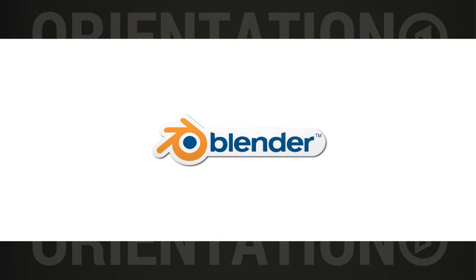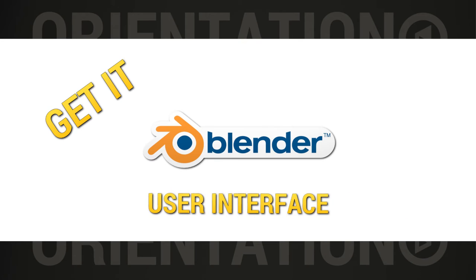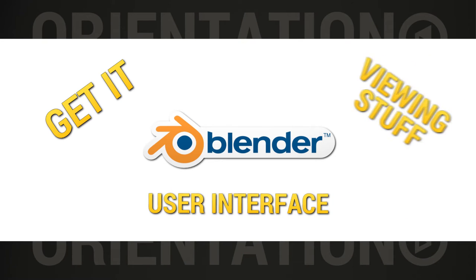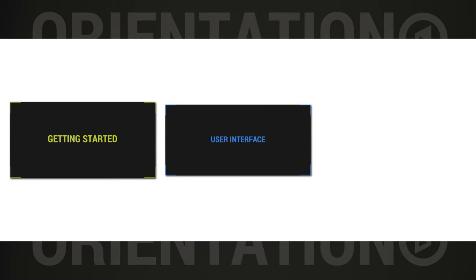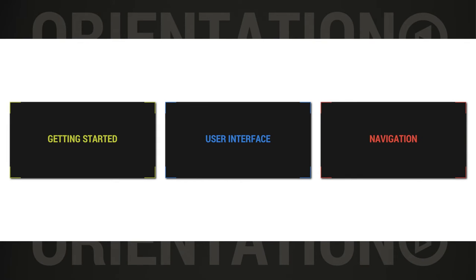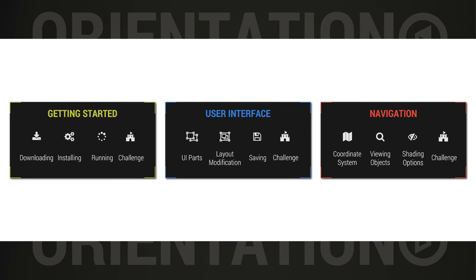The Orientation series will introduce you to the Blender community and tell you all you need to know about how to get Blender on your computer, how the user interface works, and how to view things within Blender with perfect control. To this end, the series is divided into three topics, which I've named Getting Started, User Interface, and Navigation. Each topic contains four videos. The first three explain some aspect of the topic, and the last one is always the final challenge.